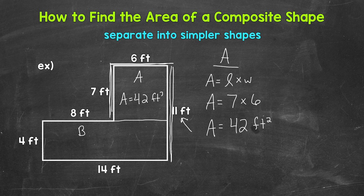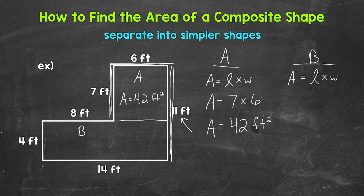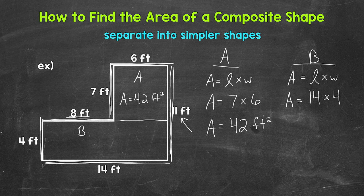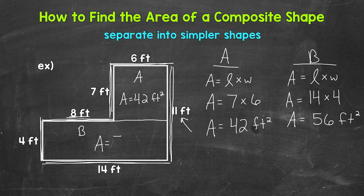Now we need to find the area of B. Area equals length times width. Let's pick out the correct sides — this is a 14 by 4 rectangle, so 14 feet by 4 feet. I'm using the longer side for the length: 14 times 4. Before we multiply, I want to mention we did not need the 8 feet, because that only goes to that point. We needed the 14 feet all the way across the bottom of that rectangle. So we need to be careful about which side lengths we are using. 14 times 4 equals 56, so the area of B is 56 square feet.